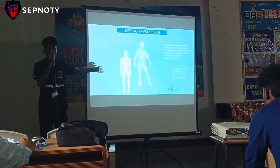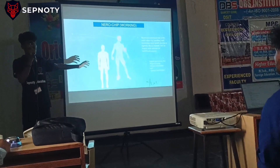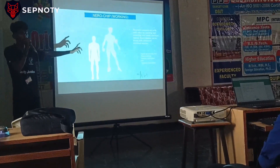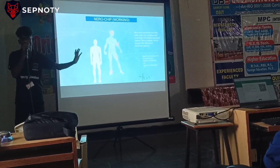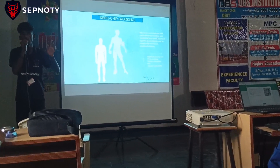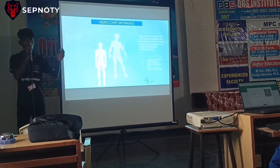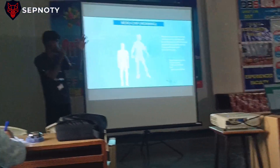This is the working of the Neuralink chip — you place the chip in your brain, and after that you can control your entire body parts like a normal human being, even though you have had an effect to the spinal cord neuron.